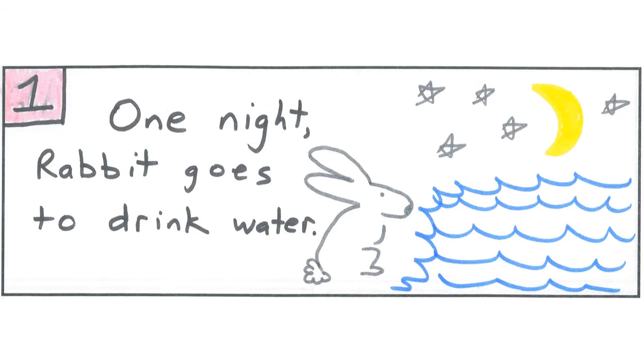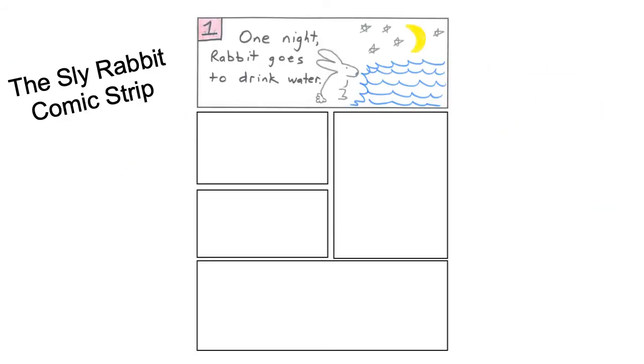In my first block, I decided to draw the rabbit, the water, the stars, and the moon. I wrote, One night rabbit goes to drink water. Now that we have finished block number one, students, please continue to work on blocks number two, three, four, and five. After you are finished, we can come back and compare your comic strip and my comic strip. Teachers, please pause the video now to allow your students time to finish.